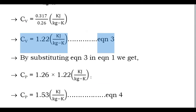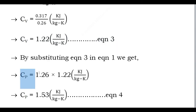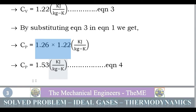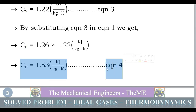Substituting the Cv value into Equation 1: Cp = 1.26 × 1.22 = 1.53 kJ/kg·K. Consider this as Equation 4. So we have now found the values of both Cp and Cv.